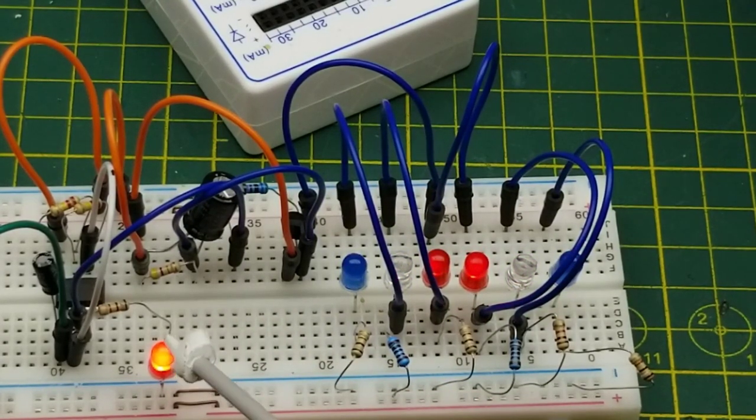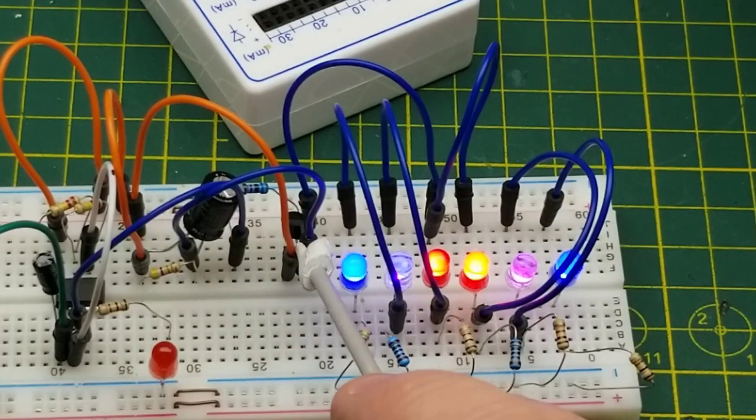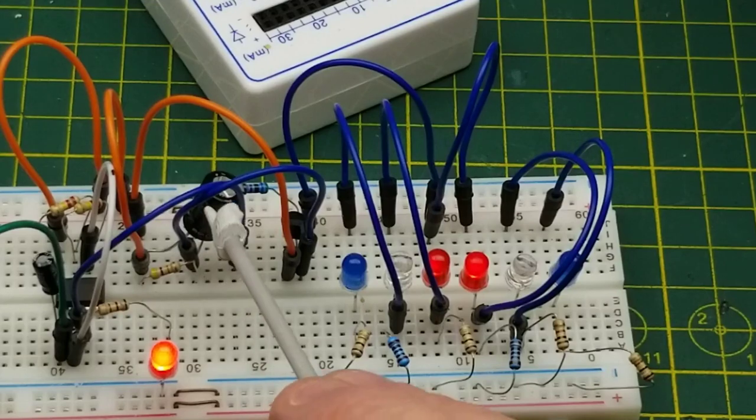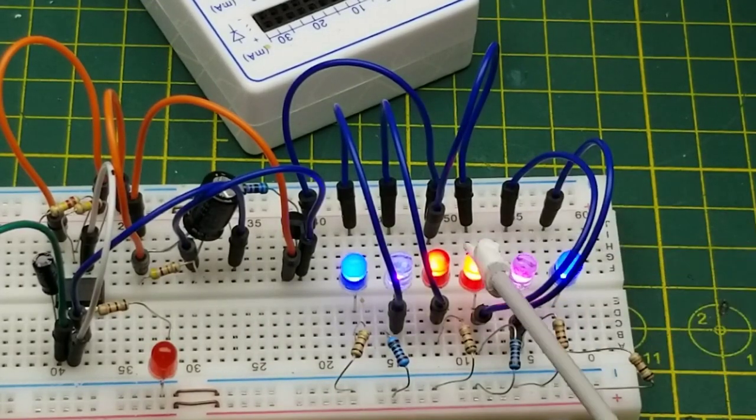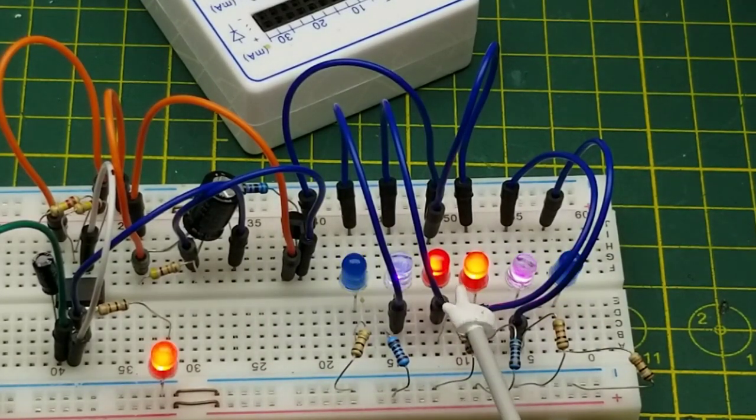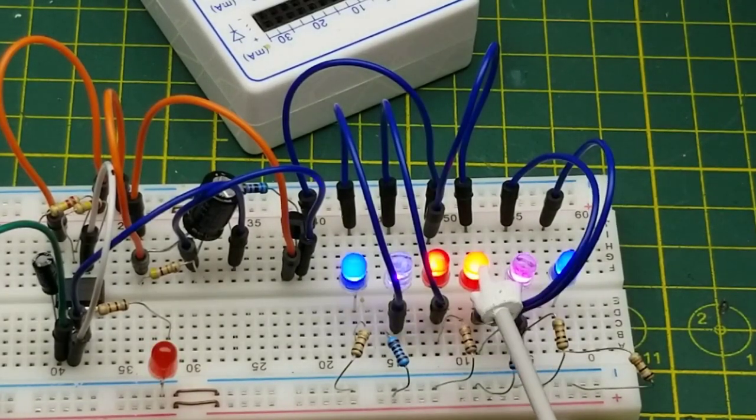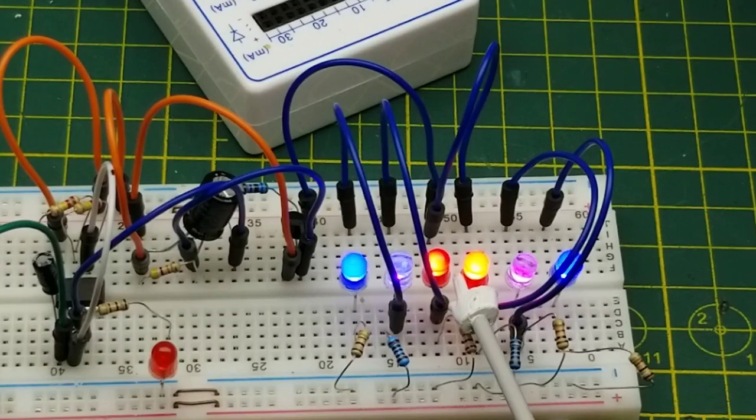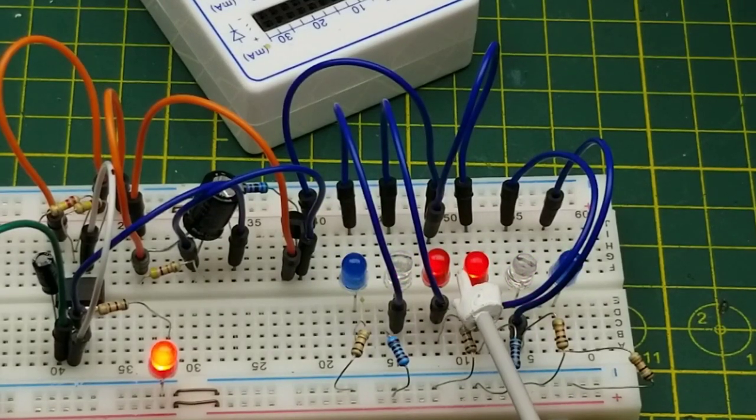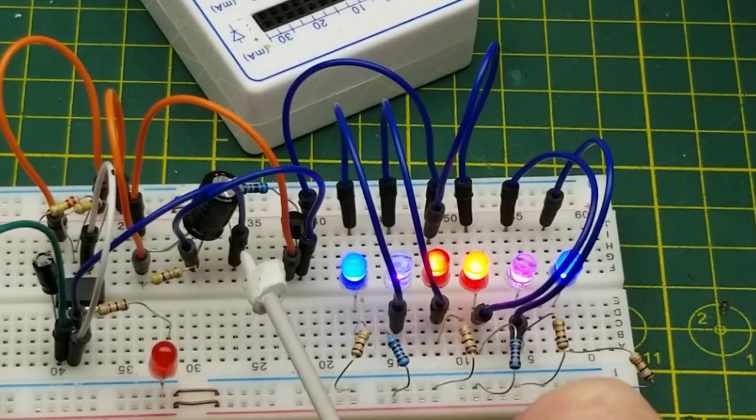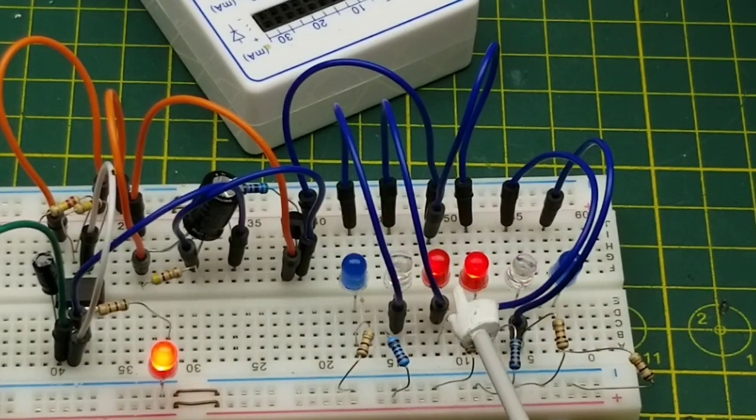Then when this goes off, the PNP transistor turns on which causes this guy to charge, and as it's charging these slowly come up. I'm not sure why it doesn't totally turn off. I'm wondering if I need a little bit lower resistor in parallel with that capacitor just to discharge it quicker, but regardless.